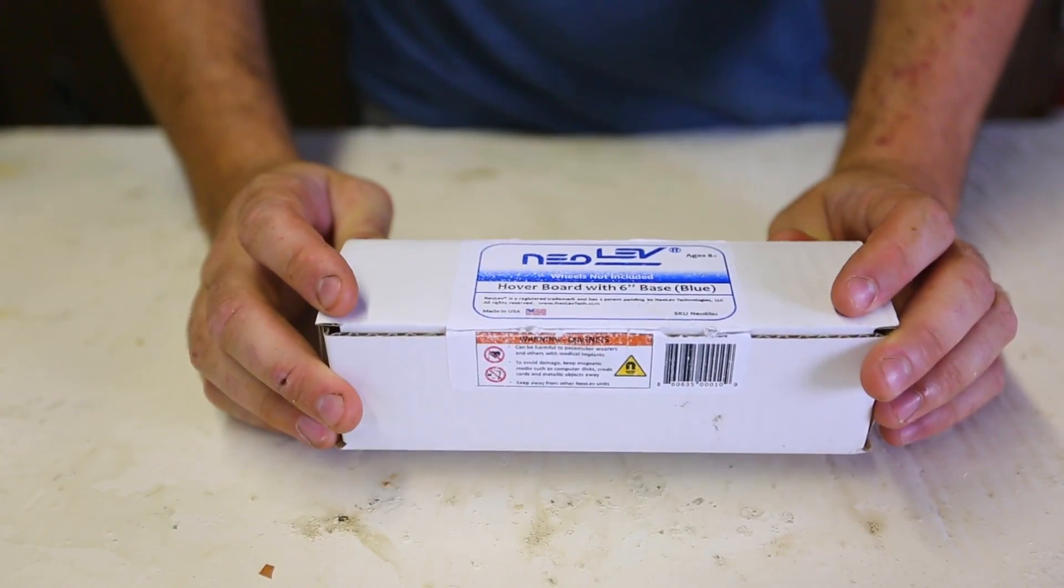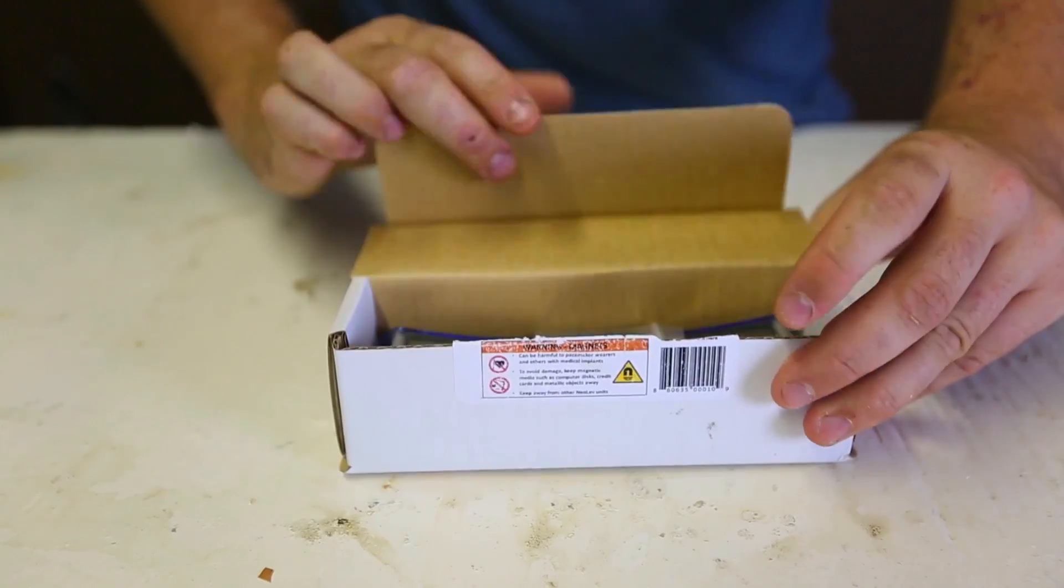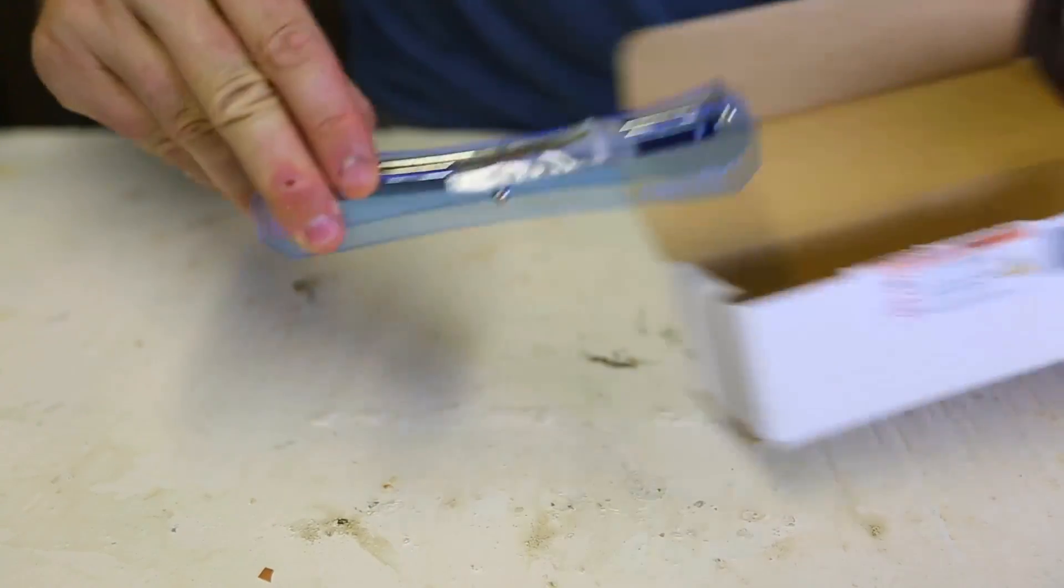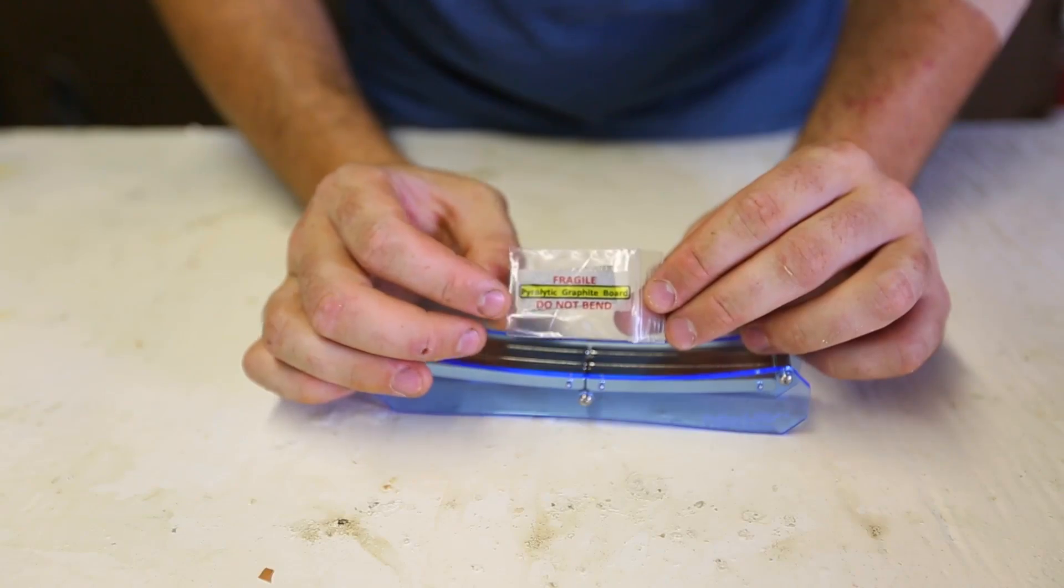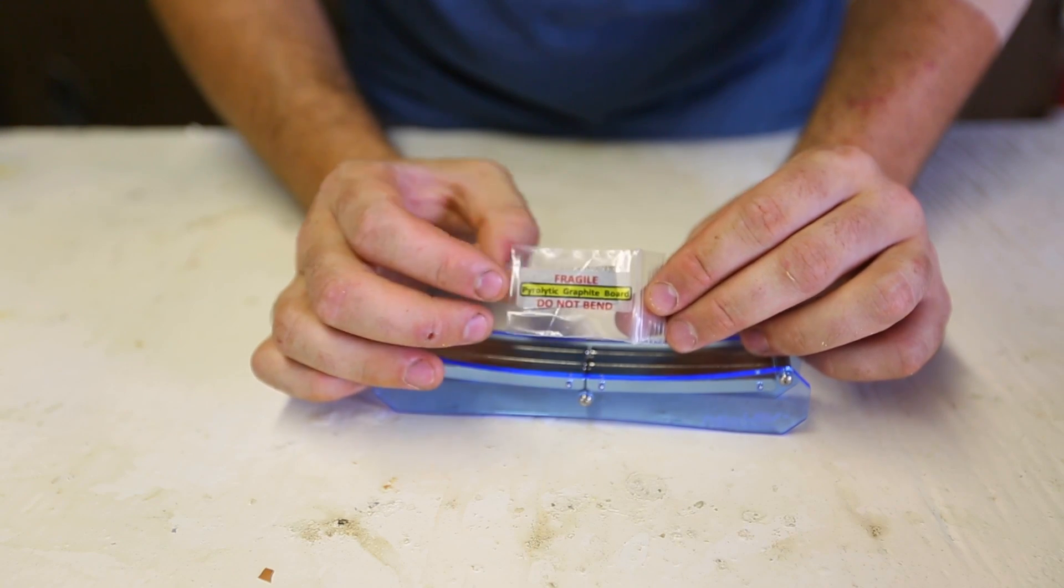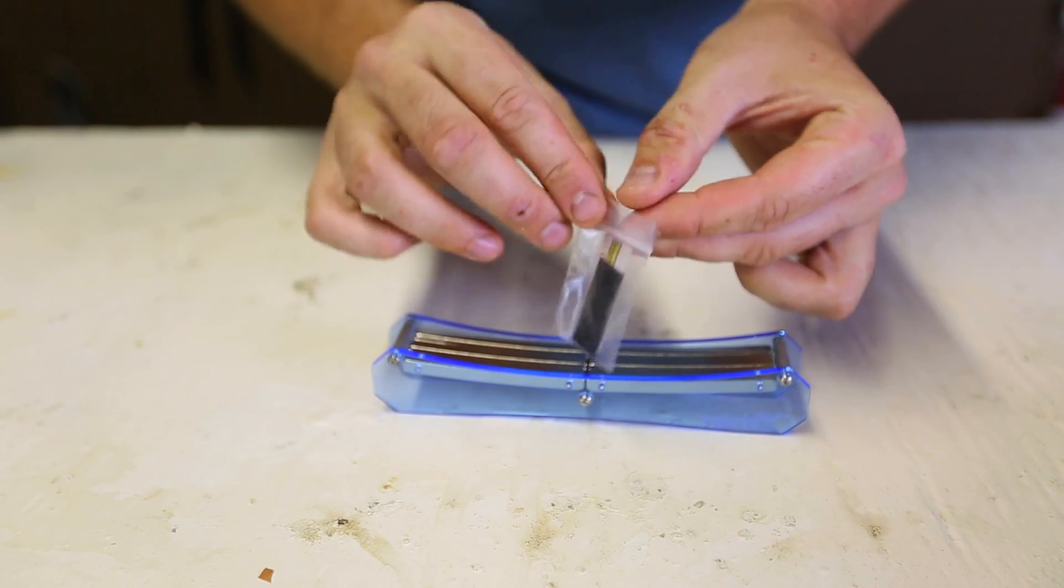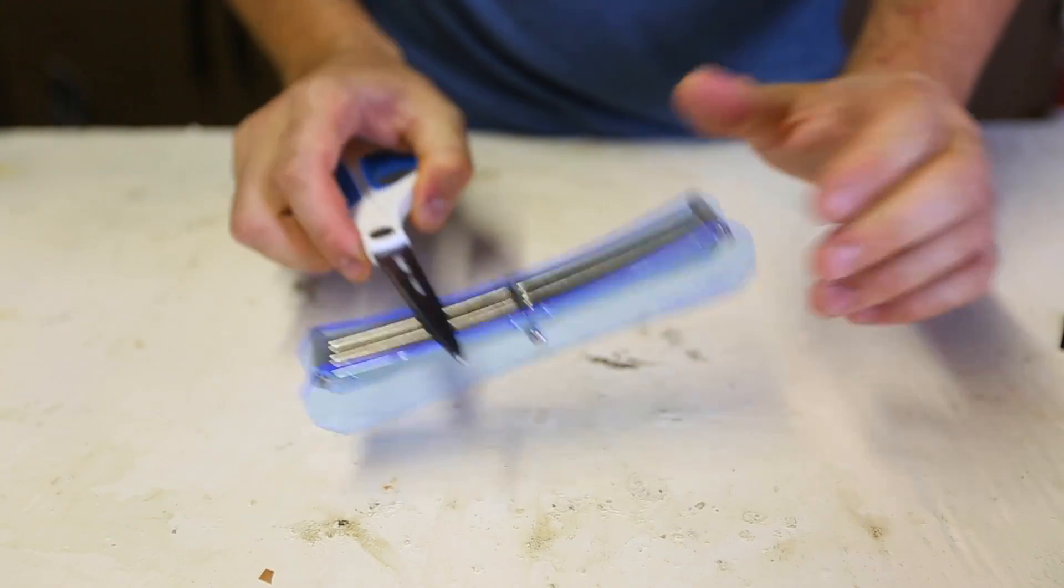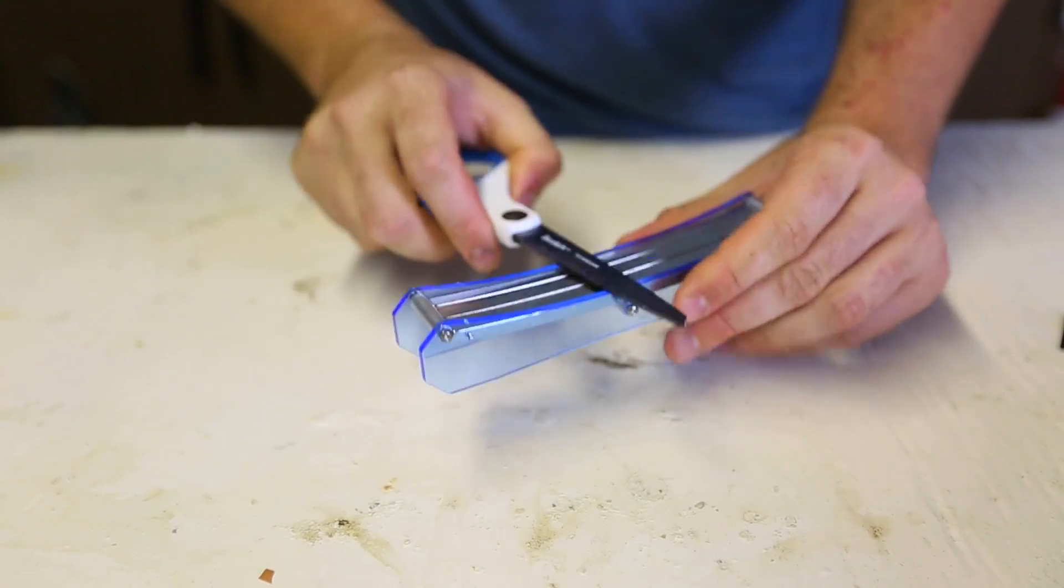For this experiment, we got magnetic levitation. So, let's unpack it and check out what it is. So, check this out. We got here pyrolytic graphite board. So, carefully not to break it. Now, this part is neodymium magnet. Super strong magnet. You see how strong it is? I can't even take it off easily.